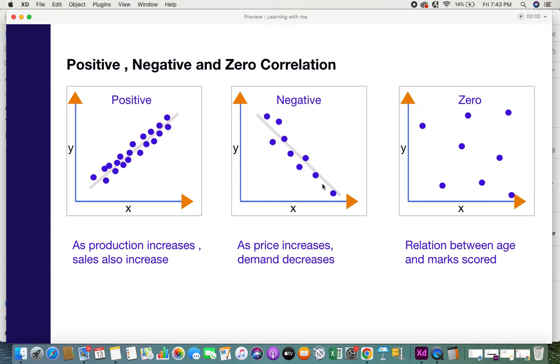Therefore, when there's going to be this opposite direction of values of the two variables, then we can say that it's a negative correlation. Because ultimately the values are decreasing, this is said to be a negative correlation.